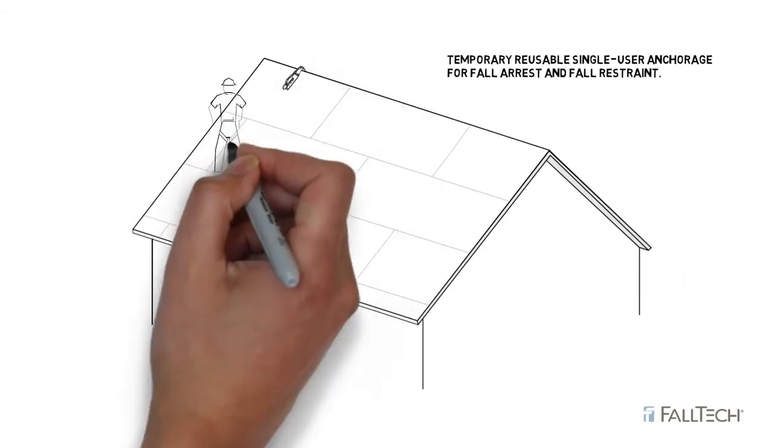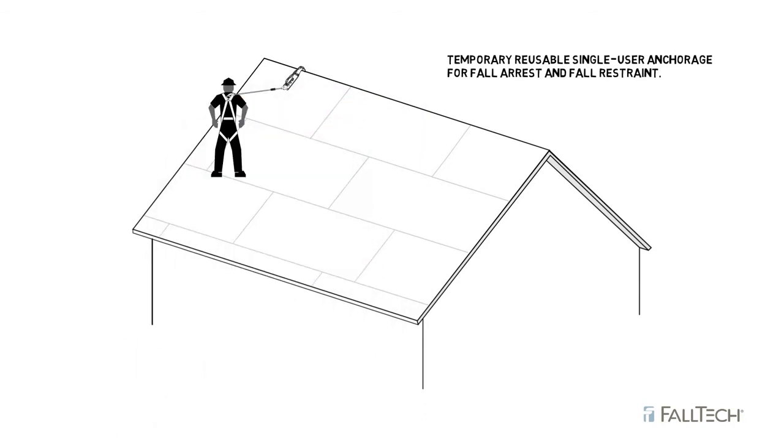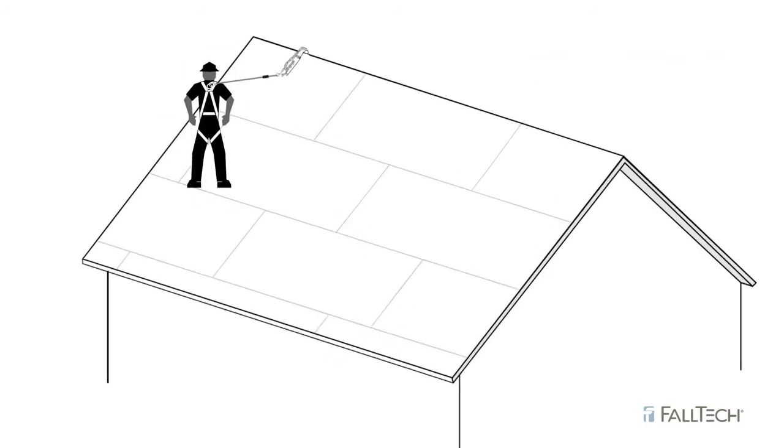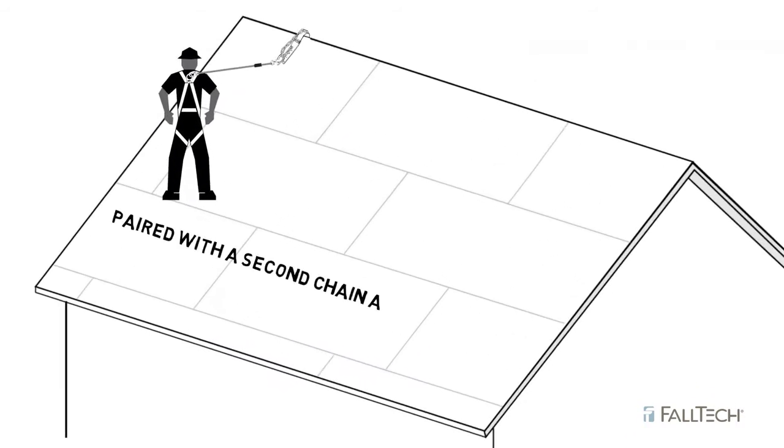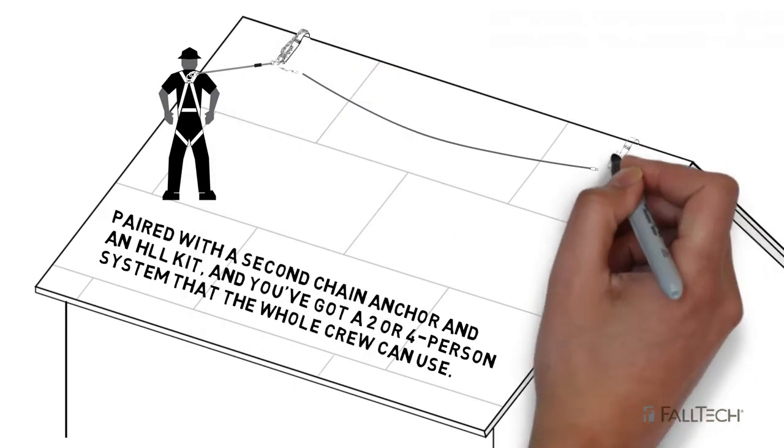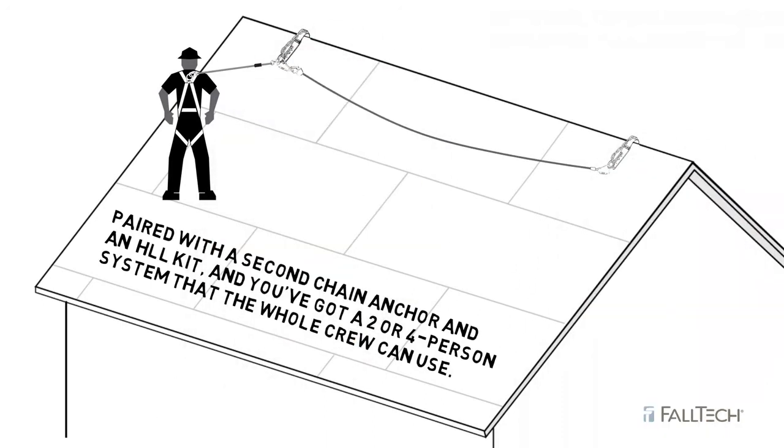On its own, the Chain Roof Anchor provides temporary single user fall arrest and restraint. However, pair it with another Chain Anchor and a Horizontal Lifeline Kit and you've got a 2 or 4 person system the whole team can use.